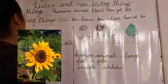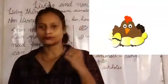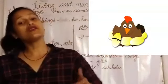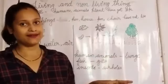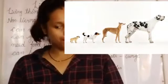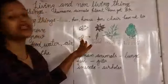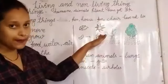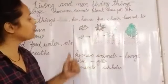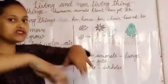Next, living things can grow. All living things can grow. A chick grows into a hen. A puppy grows into a dog. A baby grows into a man. A seed grows into a sapling, a sapling grows into a small plant, and a small plant grows into a big plant.